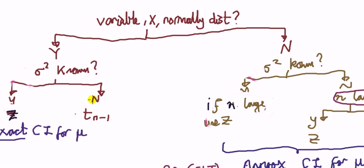If it's not, we replace the sigma square, which is unknown, by the estimate, which is the sample variance. And then we use the t table with n minus one degree of freedom.